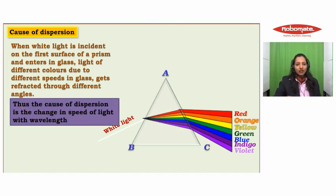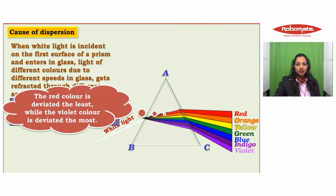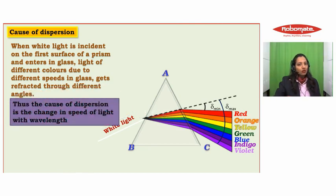The cause of dispersion is the change in the speed of light with their respective wavelength. Red color is deviated the least, while violet color is deviated the most.